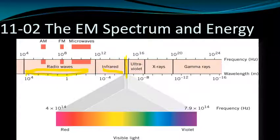Red has the longest wavelength and lowest frequency, violet has the shortest wavelength and highest frequency. Above that are ultraviolet, X-rays, and gamma rays. Gamma rays have the shortest wavelength and highest frequency.